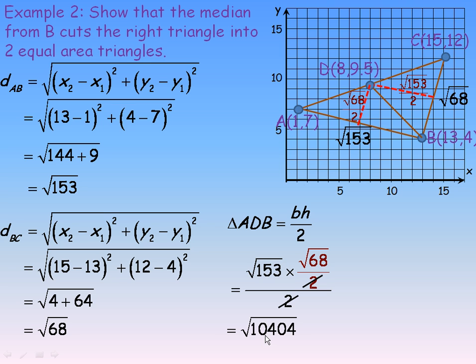Now, we could change that to a decimal, but I don't need to. Now, we'll find the area of this triangle over here, the DCB triangle. And again, base times height divided by 2. The base is the root of 68. And the height of this triangle is root 153 over 2. So, we put that in place of h. And again, the 2s divide out.